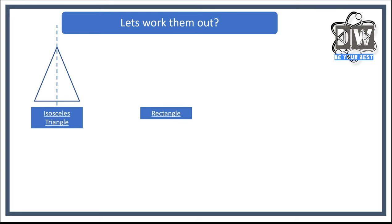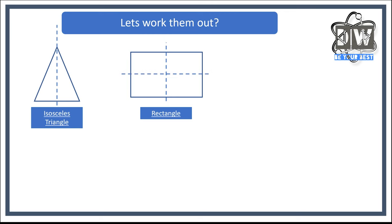The next one is a rectangle. How many lines of symmetry does a rectangle have? Hopefully you're all saying two. We've got a line of symmetry horizontally through the middle, and if we flip it round we'd also have one vertically. It looks the same this way as it does that way. A diagonal line would not give the same result.